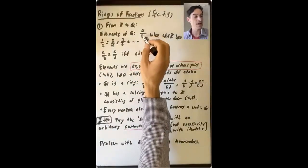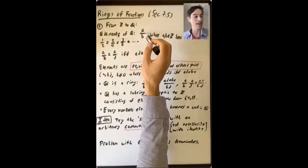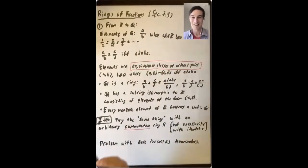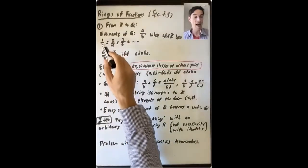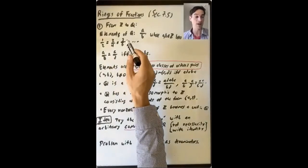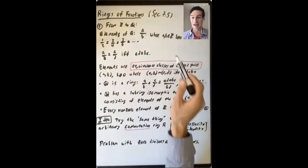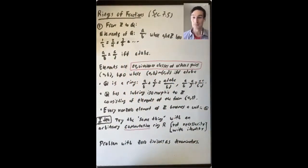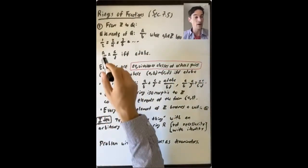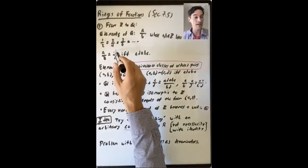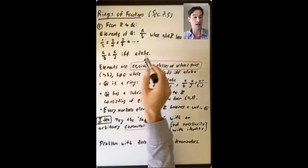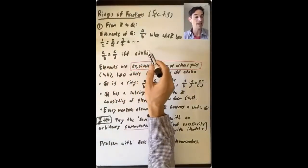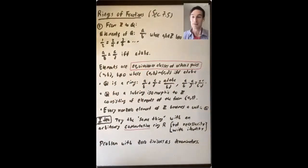It can be that many different a over b give the same rational number. Like one half is two over four, is three over six, and so on. So two of these things are equal — a over b equals c over d — if and only if you cross-multiply and get a·d equals b·c.